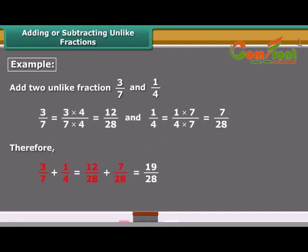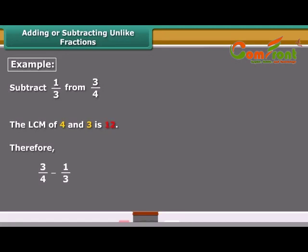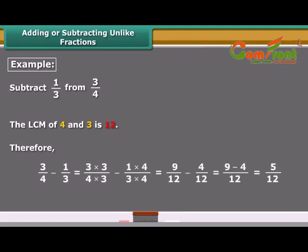Note that 28 is the least common multiple, or LCM, of 7 and 4. In another example, to find the subtraction of unlike fractions, we need to find equivalent fractions of 3 upon 4 and 1 upon 3 which have the same denominator given by the LCM of 4 and 3. The required LCM is 12. Therefore, the subtraction of 3 upon 4 and 1 upon 3 is 5 upon 12.